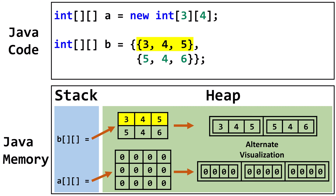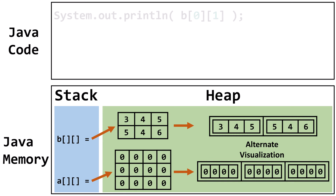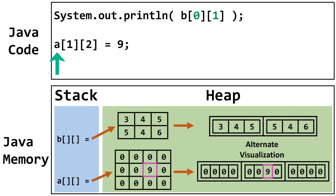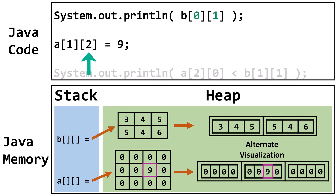It's easy to look at the code and see the top line corresponding to row 0 and the next line corresponding to row 1. Now that we've created a couple of two-dimensional arrays, let's access them. This line of code will print out the contents of the B array at row 0, column 1, and output the int 4. This line of code will assign the value 9 to the A array at row 1, column 2.